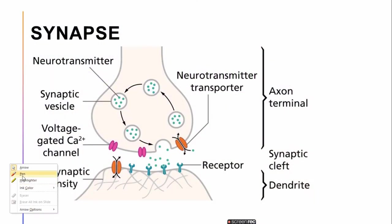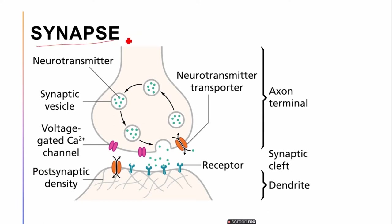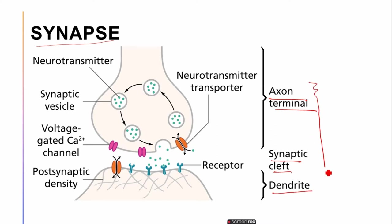Before moving ahead, I want to talk about the synapse, because if you don't know about the synapse, understanding the classification becomes very difficult. What is a synapse? Basically the axon terminals, the synaptic cleft, and the dendrites of another neuron — these three all make the synapse.